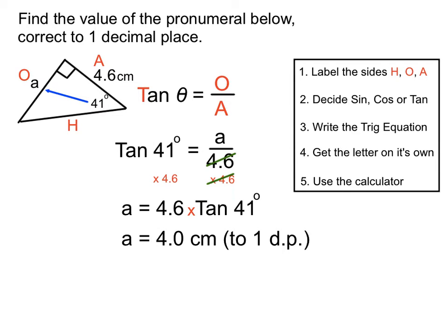That's roughly the same as the other side of 4.6, so that makes a bit of sense. We just follow those steps each time — sometimes choosing sine, cos or tan depending on the arrangement of sides, but most of the calculation steps are the same each time.